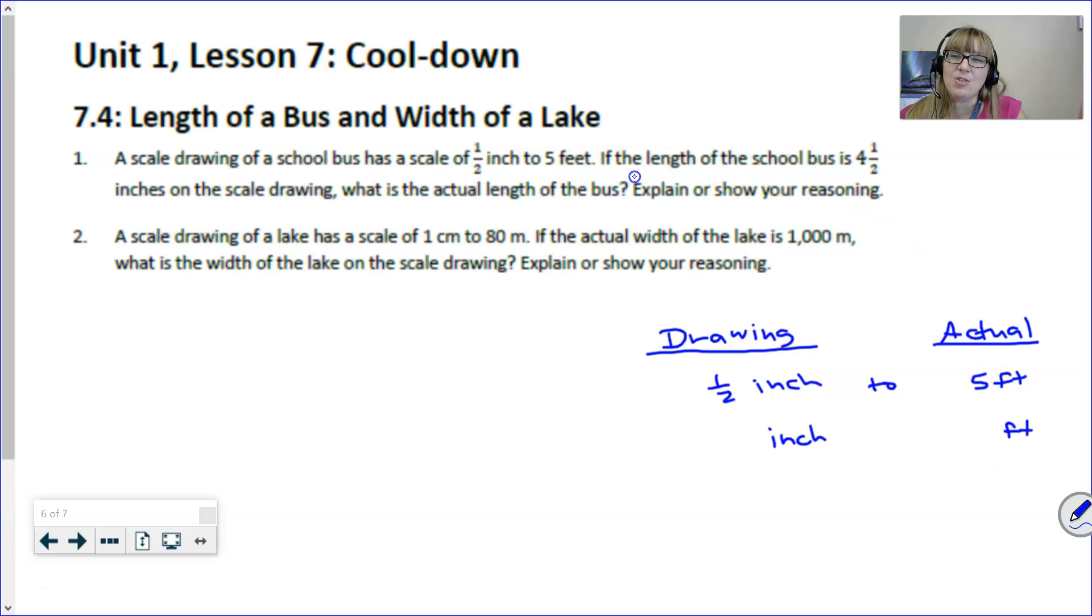As I continue to read it says if the length of the school bus is four and a half inches, what is the actual length going to be? Again observe that I've already focused on inches changing into the feet so now all I have to do is focus on how those numbers are changing. How is half an inch changing to five? Another way we can think about this is how many halves are in five and that would be ten. So one half multiplied by ten is five. That means I'm going to take this four and a half multiply it by ten to get 45 feet.